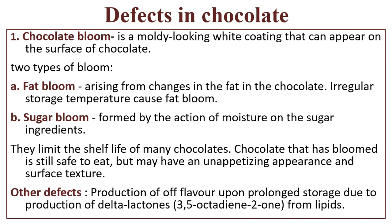Defects in chocolate — chocolate bloom: it is a moldy-looking white coating that can appear on the surface of chocolate. There are two types: fat bloom, arising from changes in the fat in chocolate due to irregular storage temperatures; and sugar bloom, formed by the action of moisture on the sugar ingredients. They limit the shelf life of many chocolates. Chocolate that has bloom is still safe to eat but may have an unappetizing appearance and surface texture.